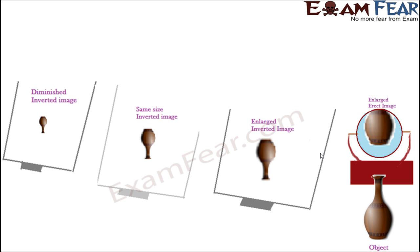Looking at all four scenarios we discussed: at a certain position the image was diminished and inverted; then gradually it became the same size, still inverted; then it became enlarged, still inverted; and finally it became erect and enlarged. Can you tell me — based on what I have explained — in which of these scenarios the image is real and in which the image is virtual?